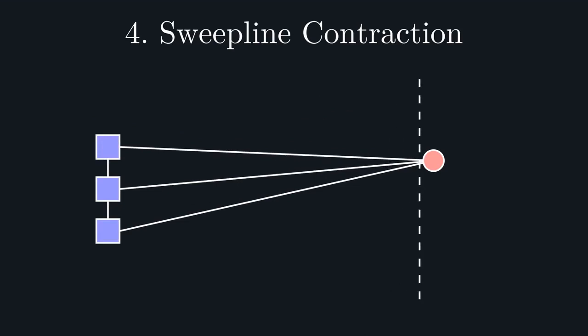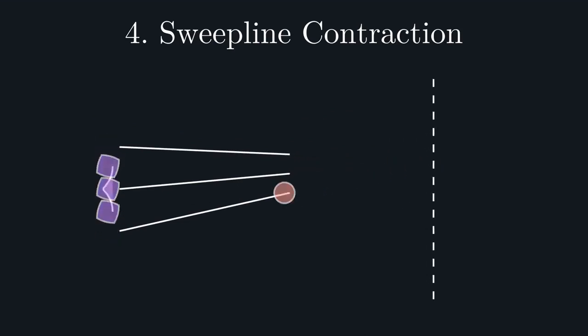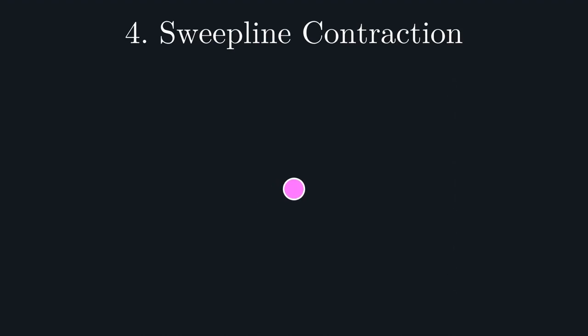Once the entire network has been passed over, we're once again left with a single number, which is our output.